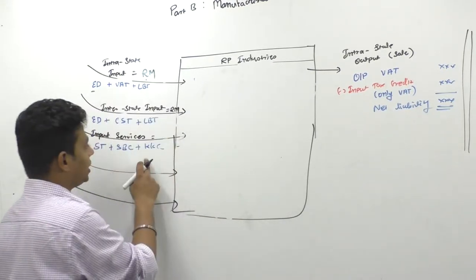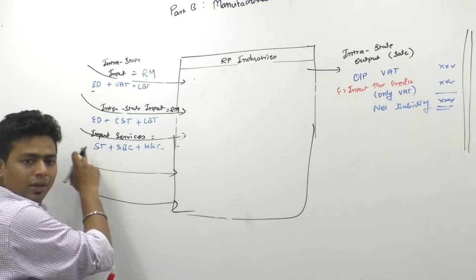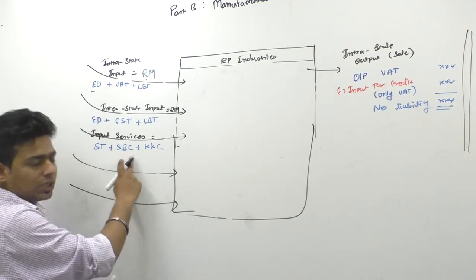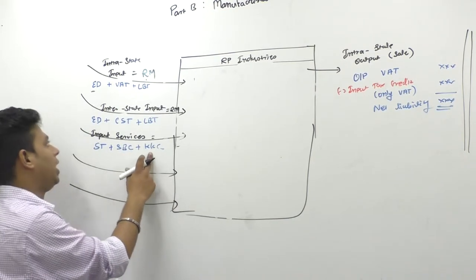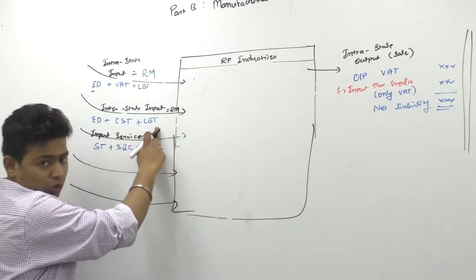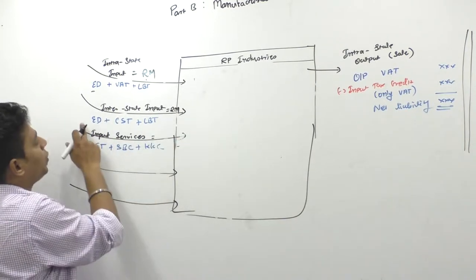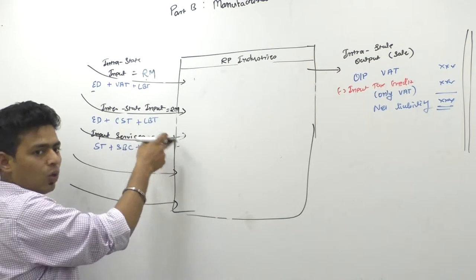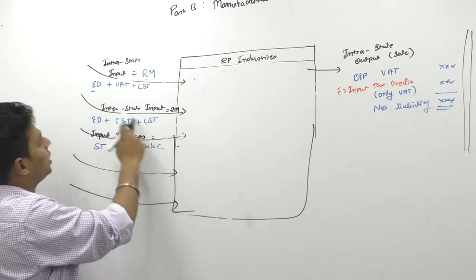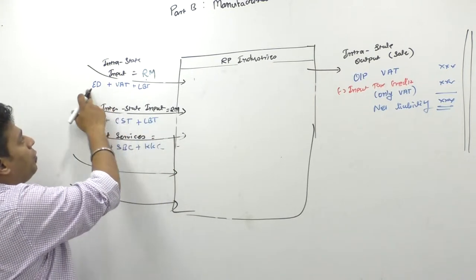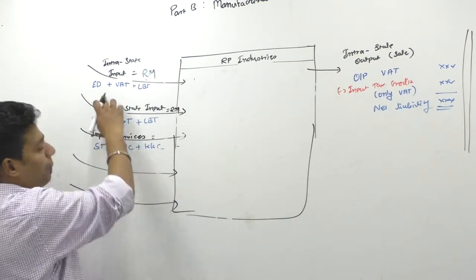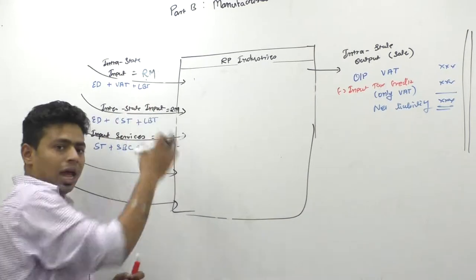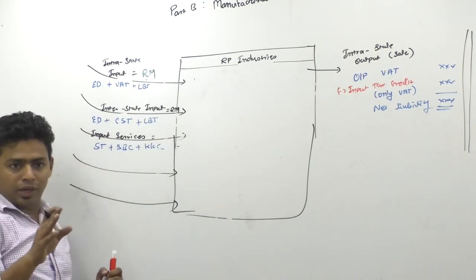Whenever you take services, you have to pay service tax. Whenever you purchase goods — raw material — you have to pay excise duty, CST, local body tax. Whenever you purchase intrastate goods, you had paid excise duty, VAT, and LBT.